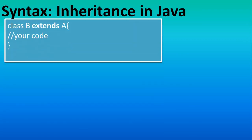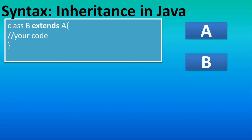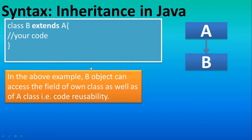Now the syntax. The syntax of the derived class is: class B extends A. This means B is the child class and A is the parent class. The syntax of class A is as usual. For class B, we write 'class B extends A', meaning class B will take some data from A, and inside we write the new code.